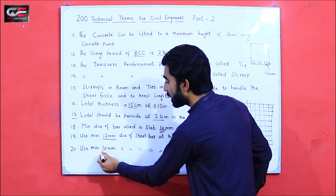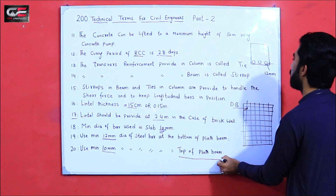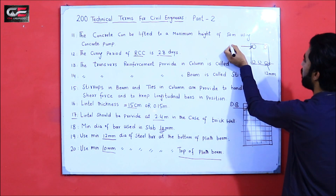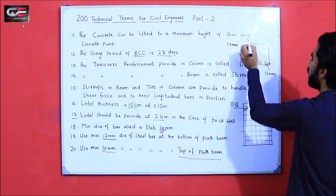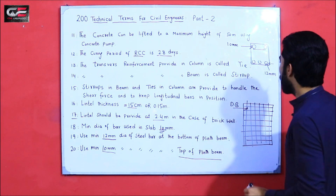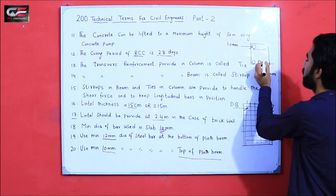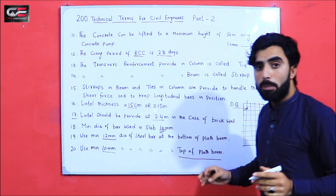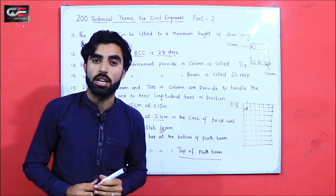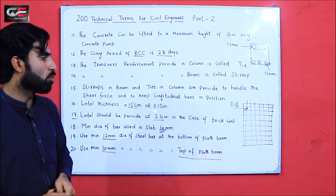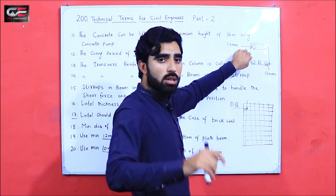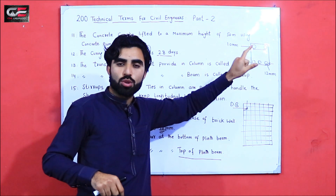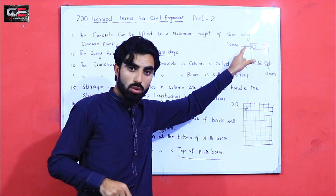Term 20: Use a minimum 10 mm diameter steel bar at the top of a plinth beam — it should not be less than 10 mm at the top portion. Also, if you are using two numbers of steel bars at the top, use a minimum of three numbers at the bottom, because the bottom steel bars should be increased for tension. Concrete is weak in tension, and the top bars transfer load to the bottom portion, so the bottom bars should be greater in both diameter and quantity.